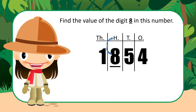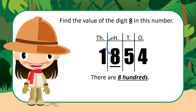8 is in the hundreds place. So that means that there are eight hundreds. If we count in hundreds, eight hundreds should give us 800. But just to be sure, let's use our fingers. Hold up eight fingers and tap each one on your chin as we count in hundreds: 100, 200, 300, 400, 500, 600, 700, 800. Excellent! So the value of the 8 in this number is 800.